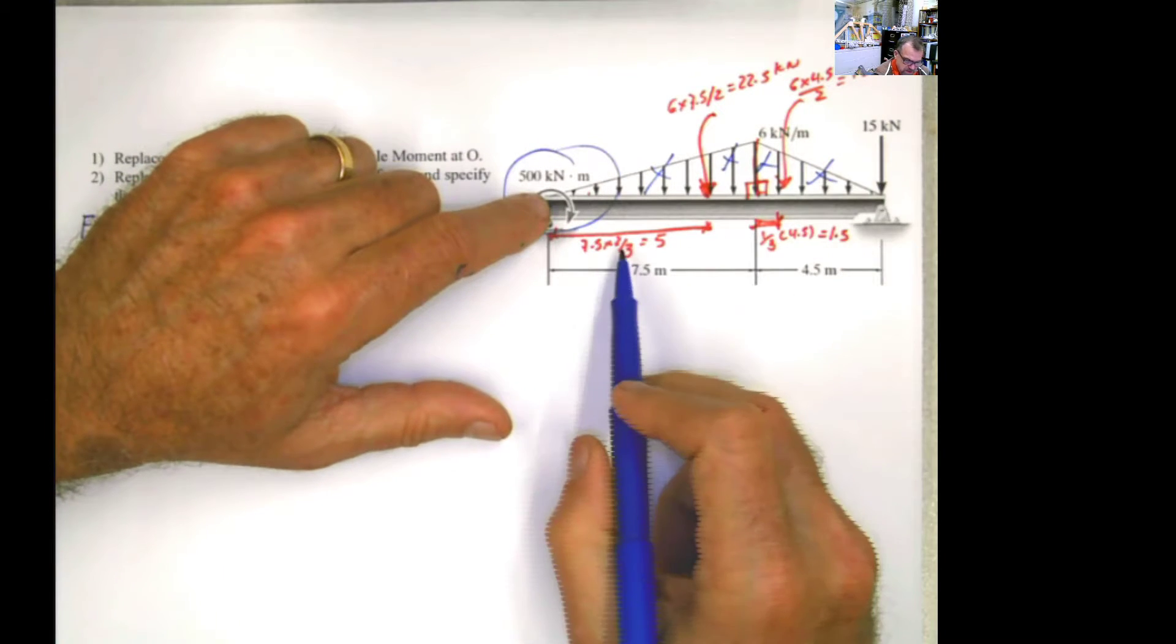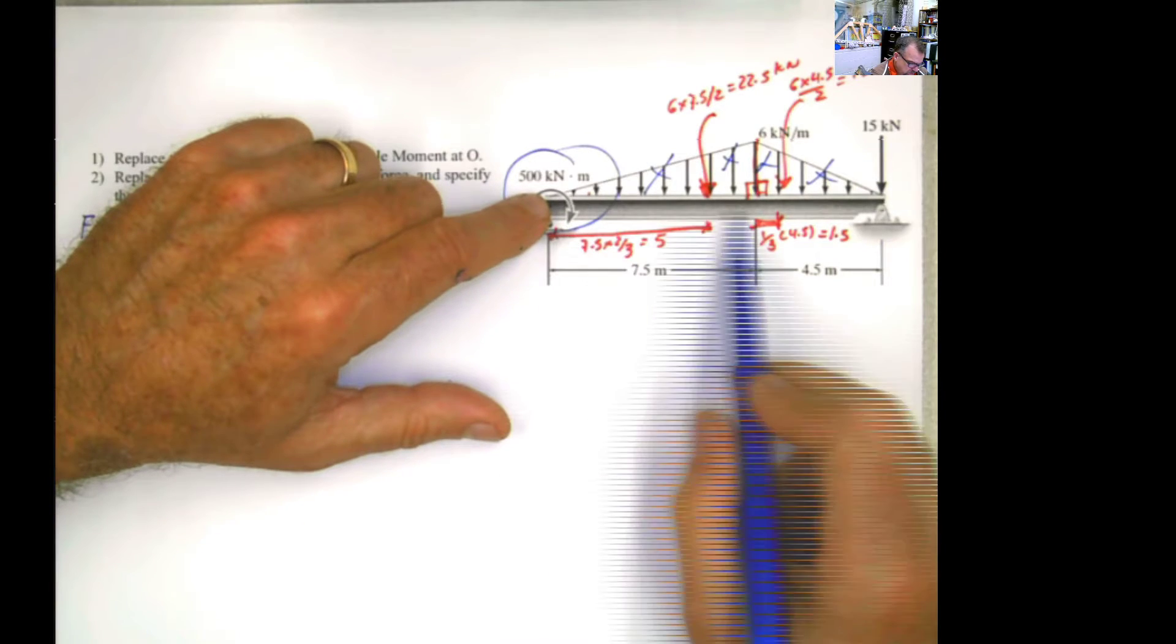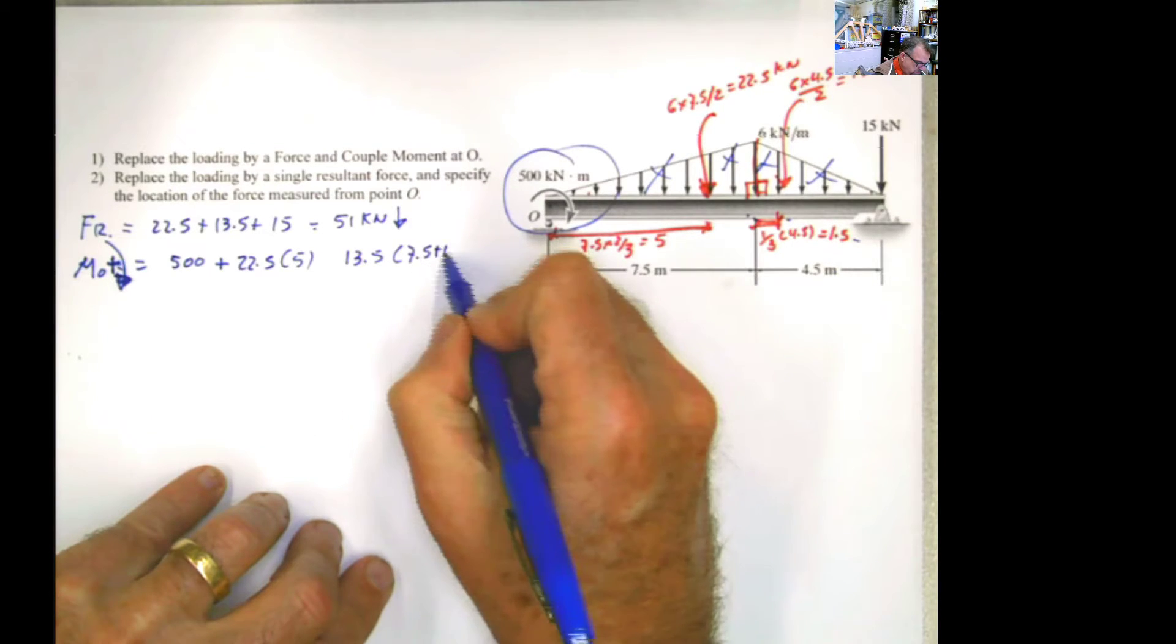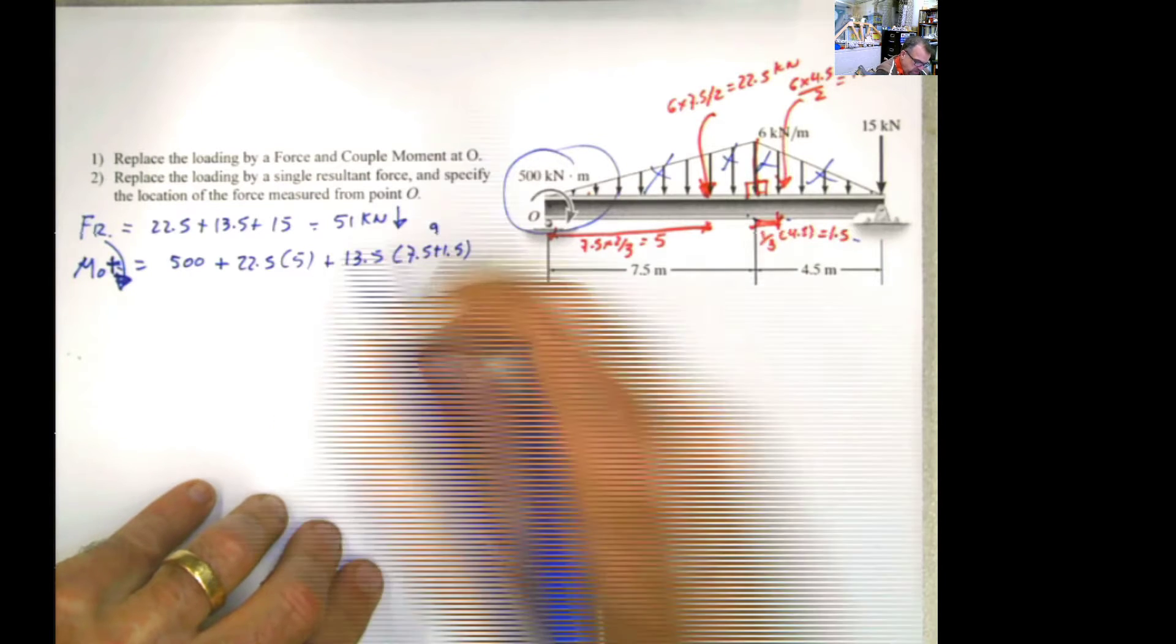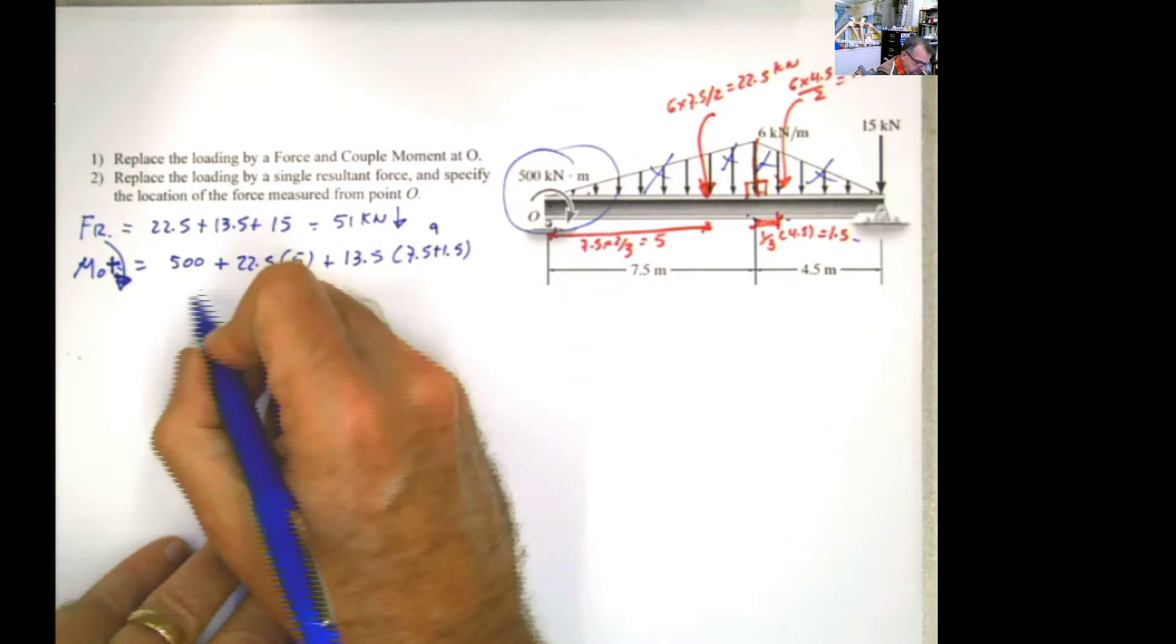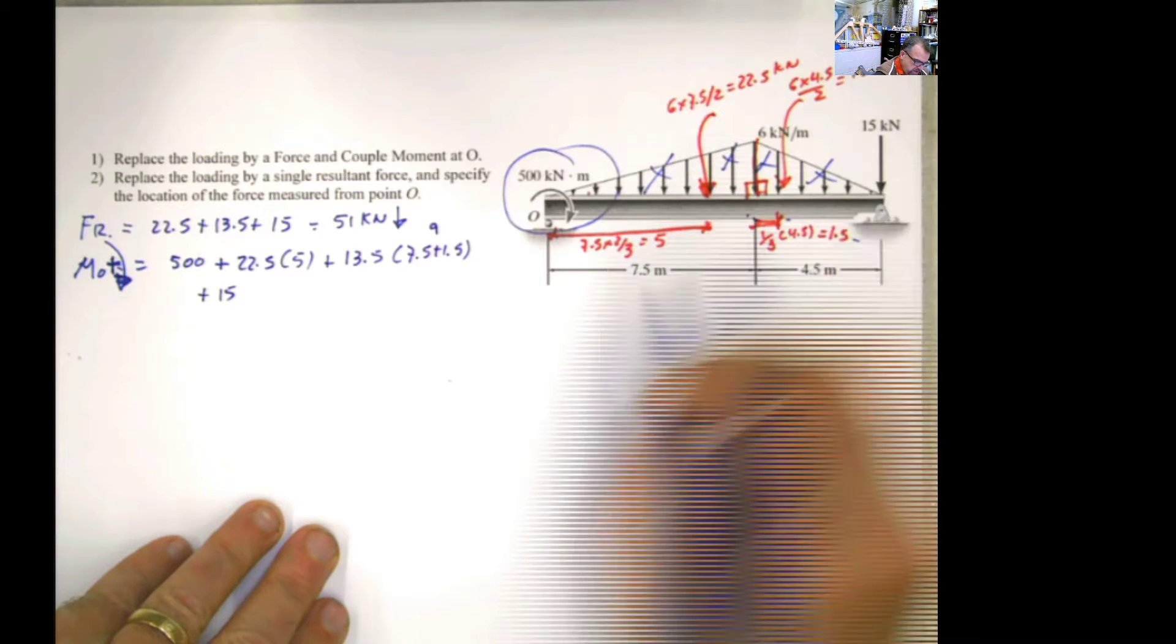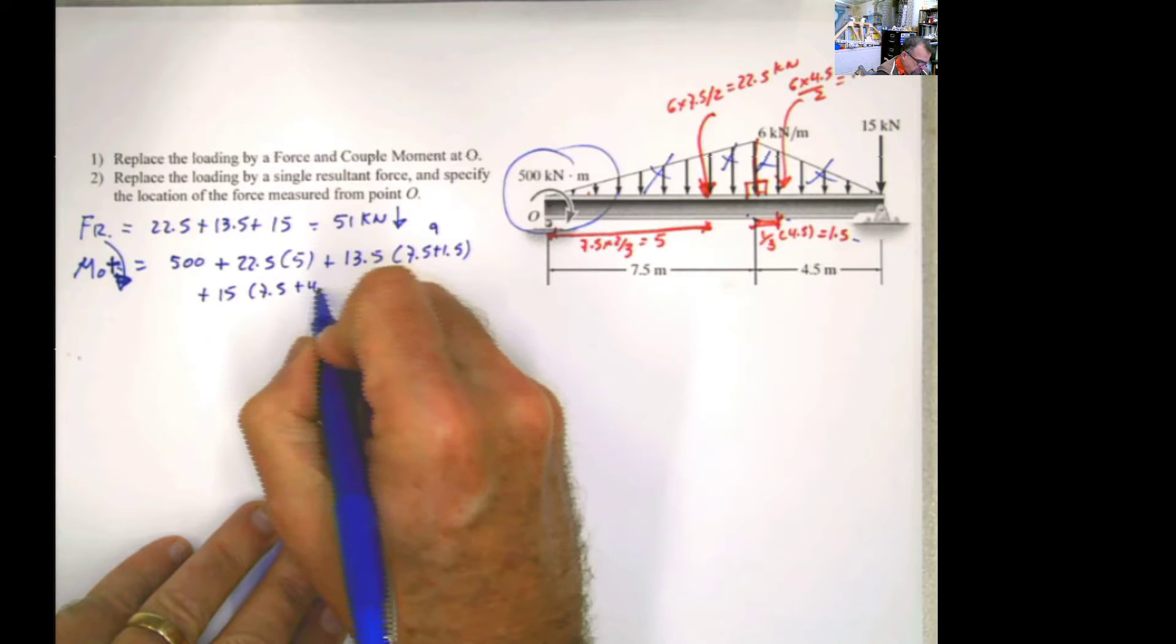Now 13.5 is the other force multiplied by this distance. And how much is this distance? This distance will be 7.5 from here to here plus this little piece, which is 1.5, so 7.5 plus 1.5 is 9. It's positive in the same direction. And then you have the 15, this load here.